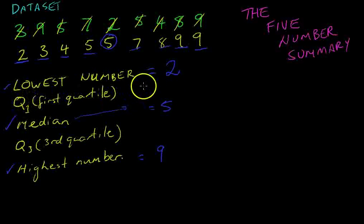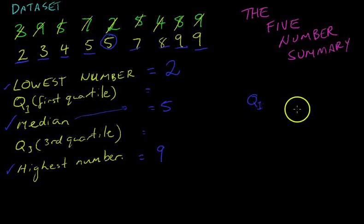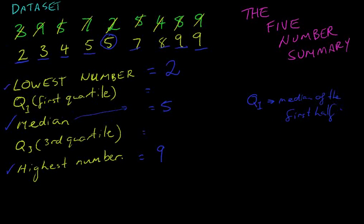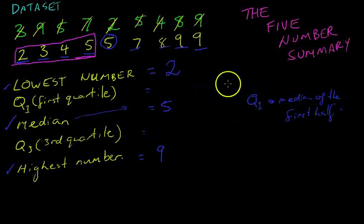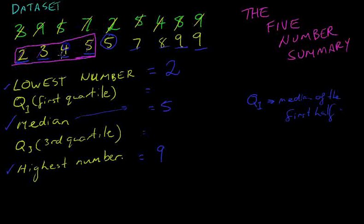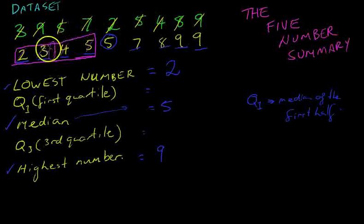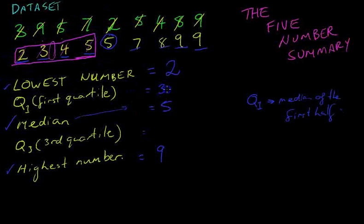That leaves two more things: Q1, which is the first quartile, and Q3, which is the third quartile. The first quartile is the median of the first half. We take the first four numbers and find their median. Working into the middle: 2, 5, 3, 4 — it's between 3 and 4. Remember, when there's no single middle number, you add those two together and divide by 2. So 3 plus 4 divided by 2 makes 3.5. Our first quartile is 3.5.